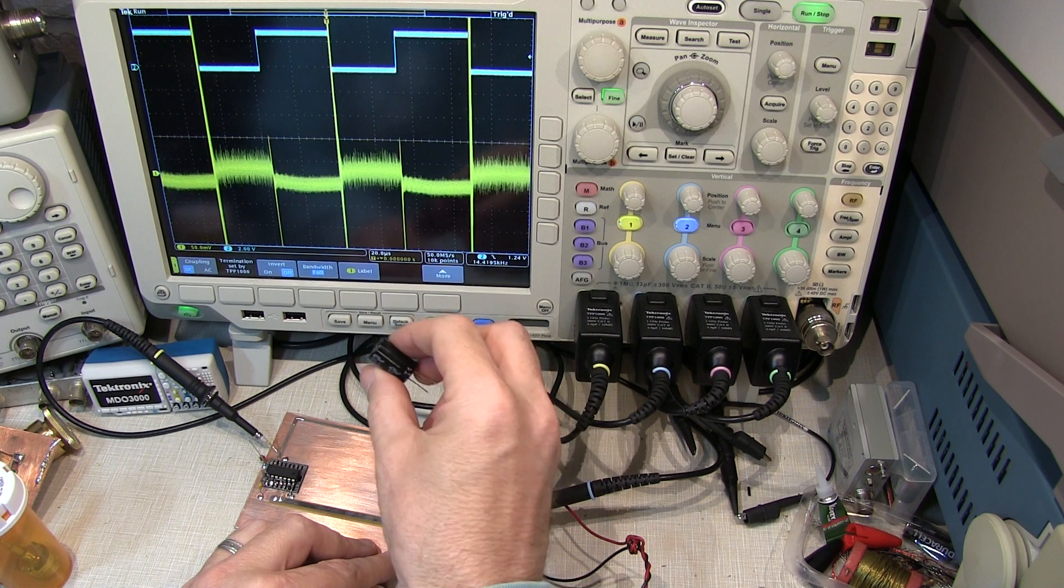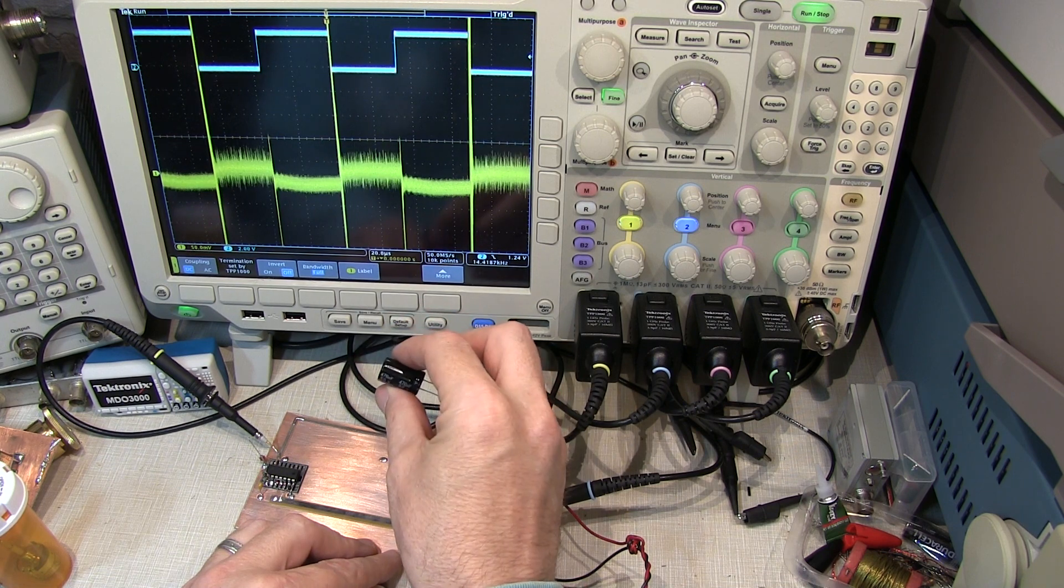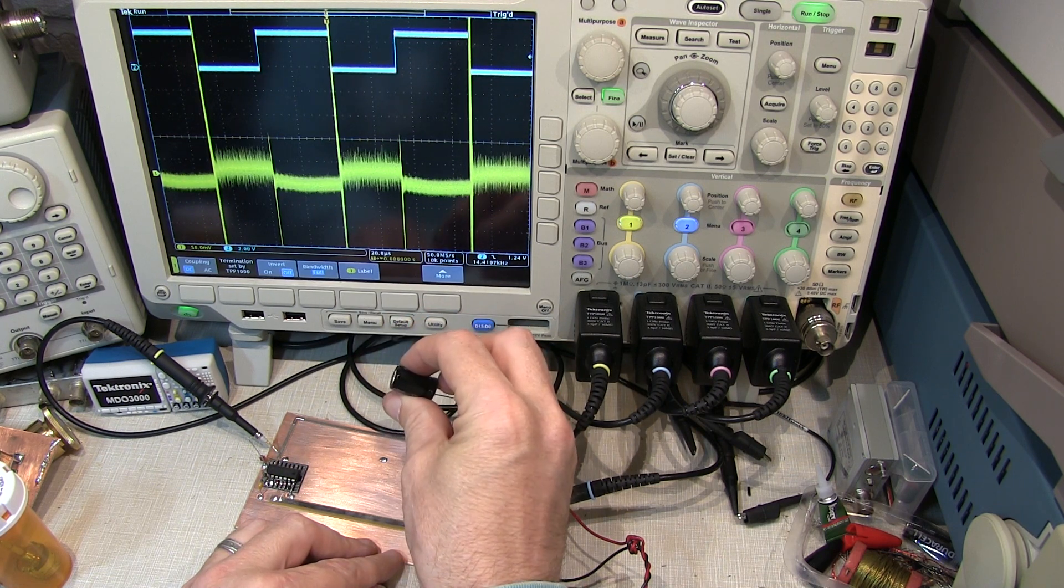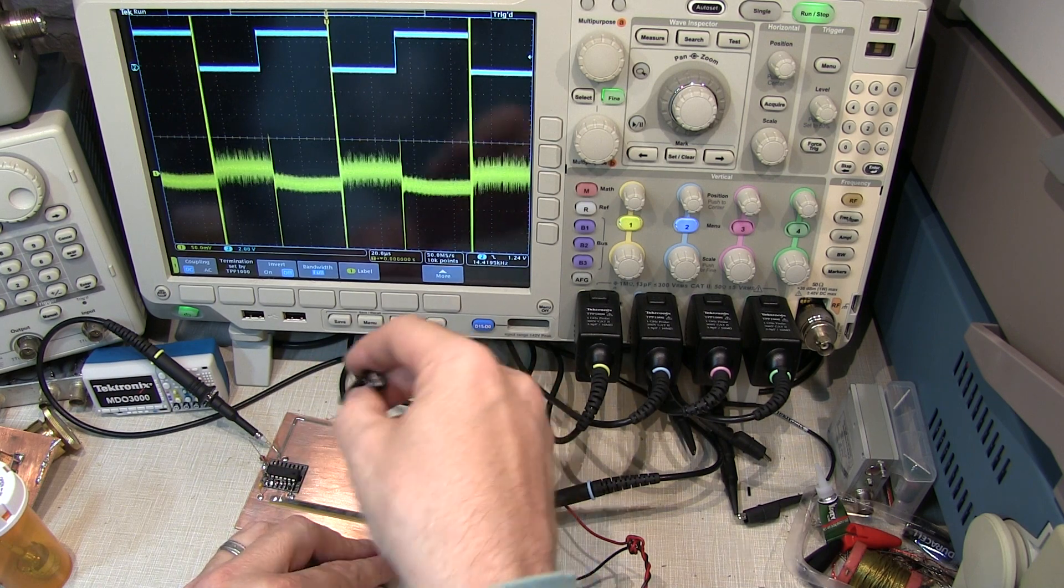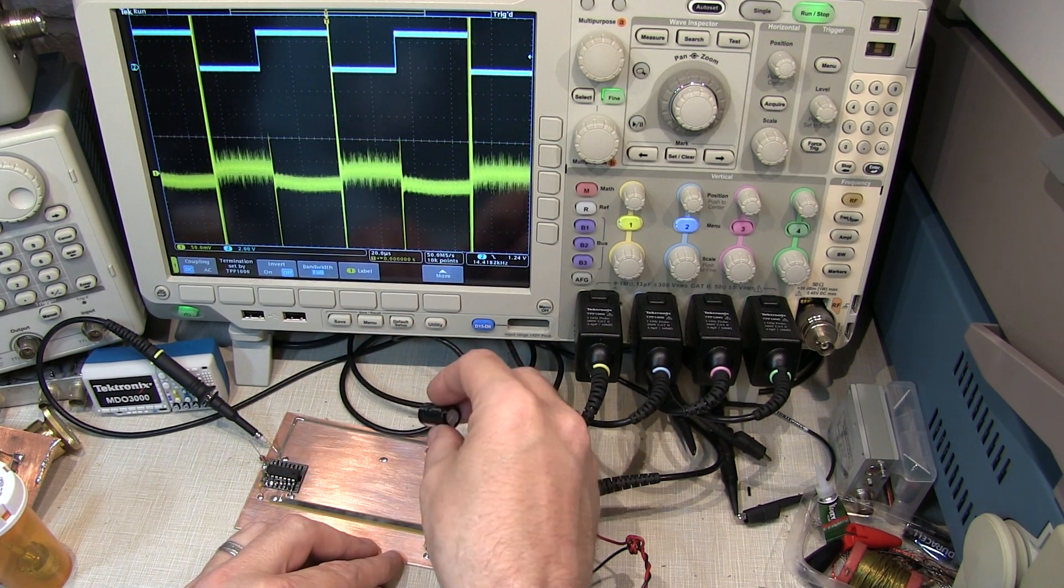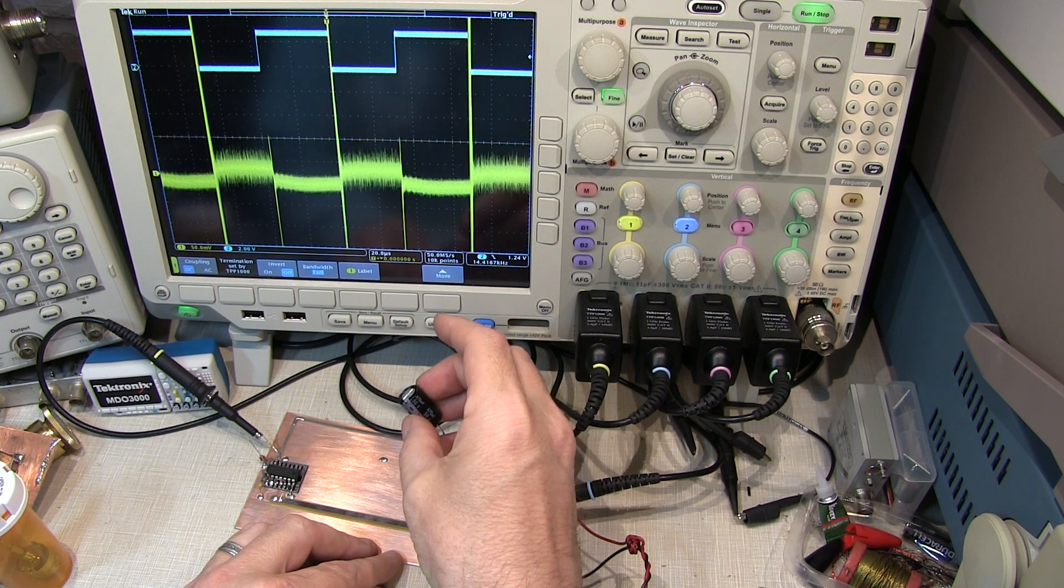So typically you'll have these bulk decoupling caps right at the power supply or the power entry point to the board because the placement isn't that critical. So let's actually solder this in place and then take a look at the effect of the high frequency component.